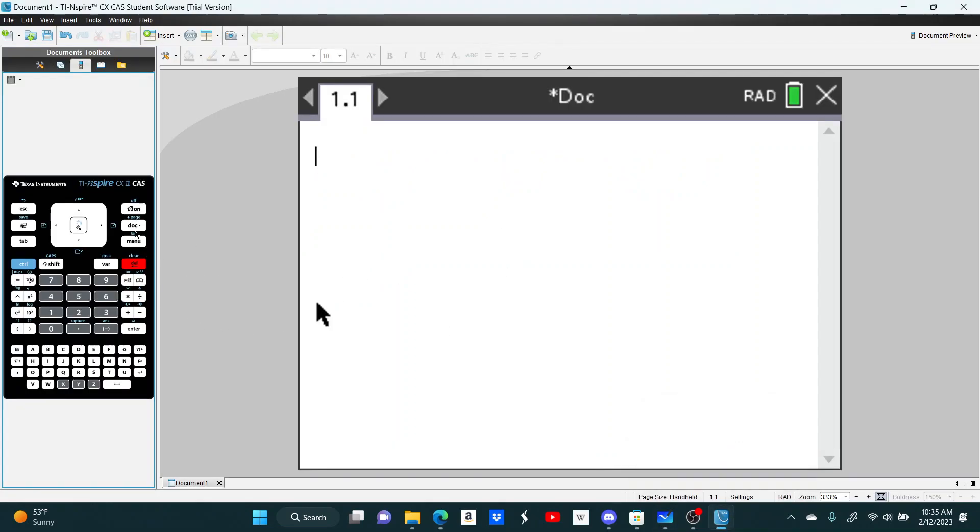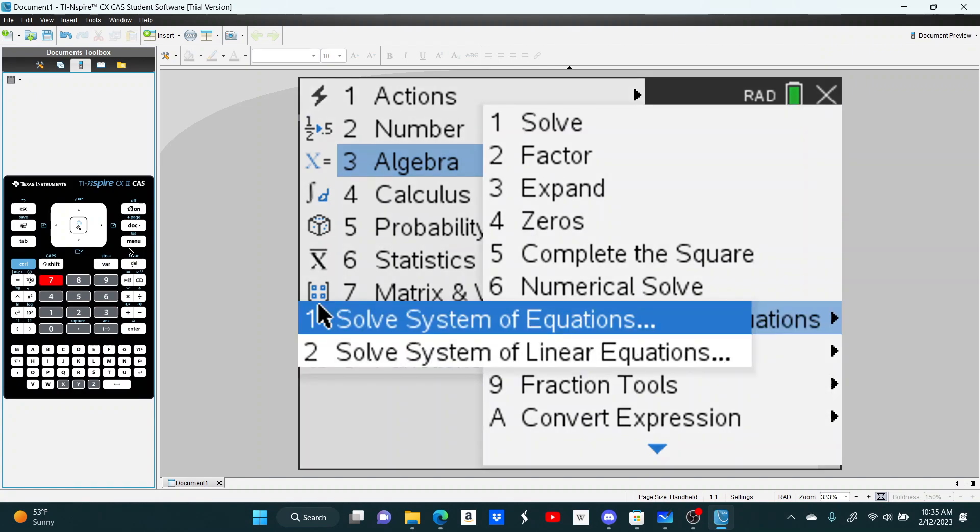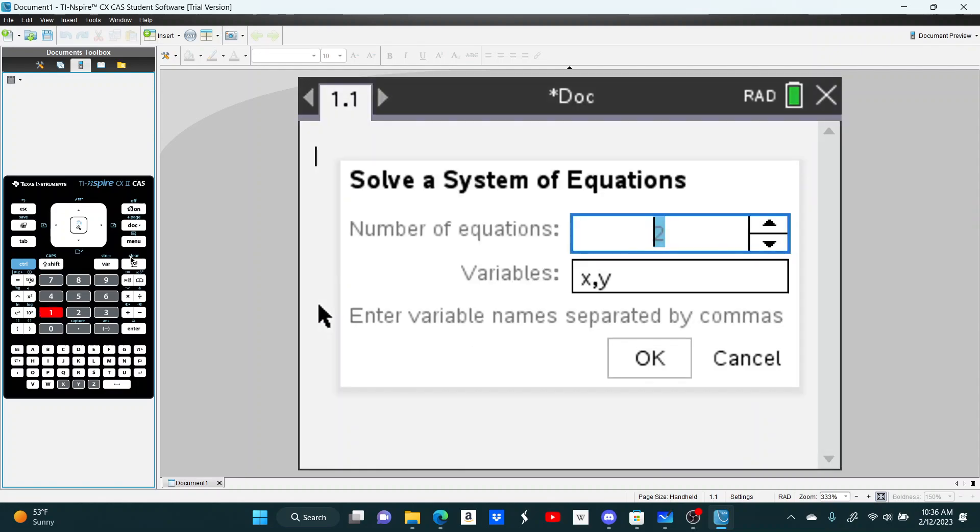You go to your calculator page, then to Algebra, and down to Solve System of Equations. Here you have two options: one for a system of linear equations and one for just a system of equations. I always use the first one because it works for anything. Even though this is a linear system, I'll use the top one because it works for everything.